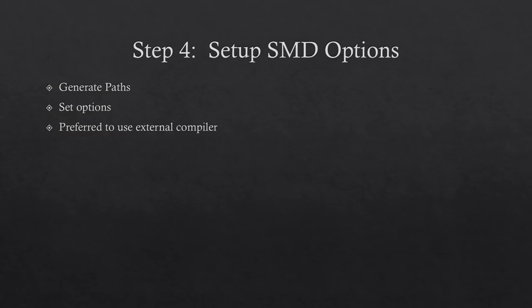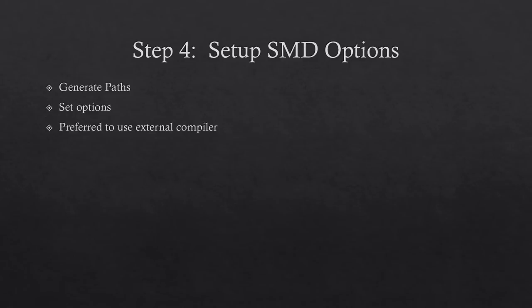Step four is to set up the SMD options. We're going to generate our paths, set our options, and prefer to use the external compiler. You can either do a full compile or not — it doesn't really matter. We're going to set it up to do the full compile, but it'll fail because I don't have the internal compiler set up right, and I prefer using external anyway.